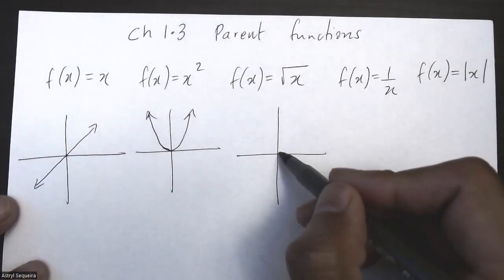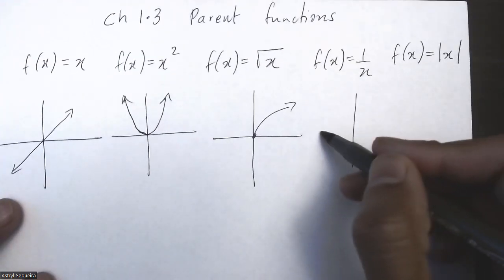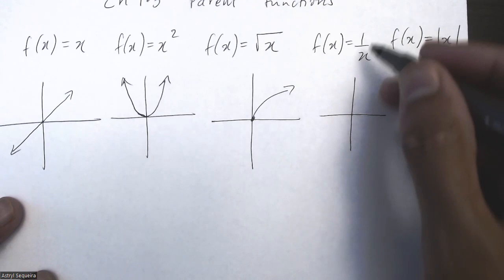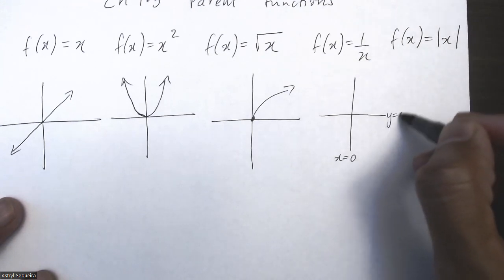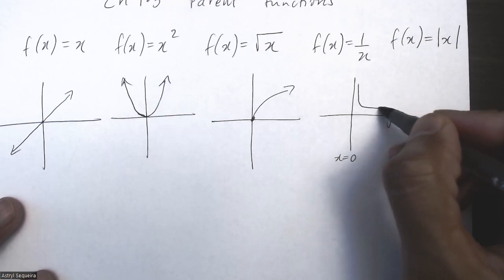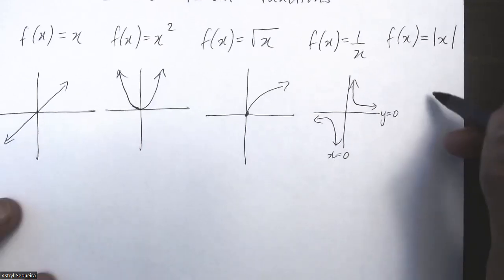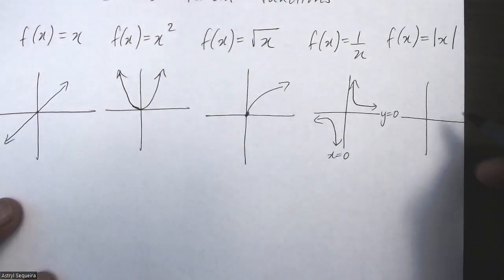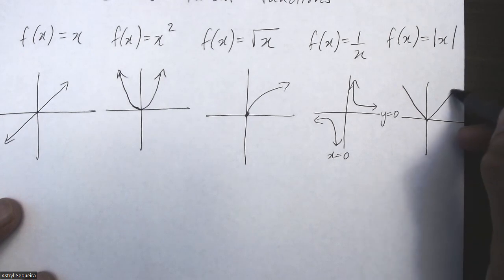The radical function starting point is again zero, zero. The 1 over x function just has a vertical asymptote at x equals zero, a horizontal asymptote at y equals zero, and then it's split like this in the two quadrants.